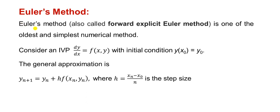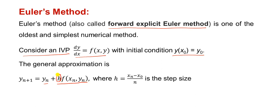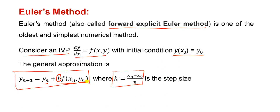Forward explicit Euler's method is one of the oldest and simplest numerical methods. With the help of this method, we compute an approximate solution for the given initial value problem. We consider an initial value problem dy/dx = f(x, y) with the condition y(x0) = y0. The general approximation formula is y_{n+1} = y_n + h * f(x_n, y_n), where h is the step size computed as h = (x_n - x0) / n. This is known as Euler's general approximation formula.